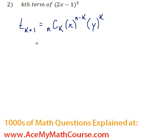In this case we are looking for the fourth term, which means that k plus 1 is 4. So if I solve for k, subtract 1 from both sides, k is just equal to 3.